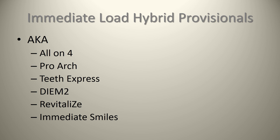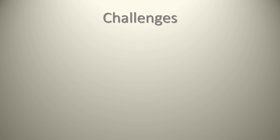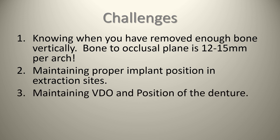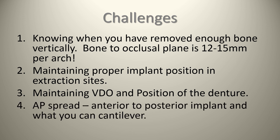There are also immediate load hybrid provisionals, also known as all-on-four. As Dr. Paolo Maló notes, he doesn't actually like the all-on-four name, because sometimes he uses three, five, or eight implants. The all-on-four concept, Pro Arch, Teeth Express, DMT Revitalized, Immediate Smiles — these are all immediate load hybrid provisionals. The challenges include knowing when you need to remove enough bone vertically, with the bone-to-occlusal plane being about 12 to 15 mm per arch, maintaining proper implant position in the extraction sites, maintaining the vertical dimension of occlusion, and managing the anterior-posterior spread and cantilever. This goes beyond the scope of our course, but introduces the challenges you can face.